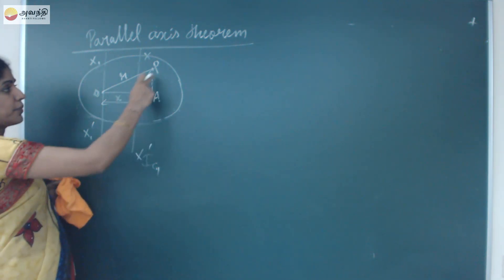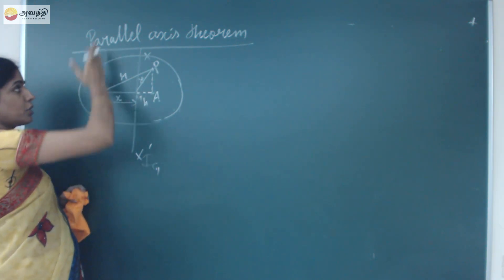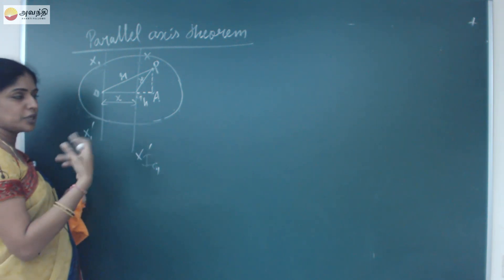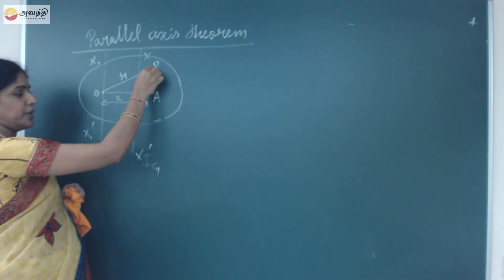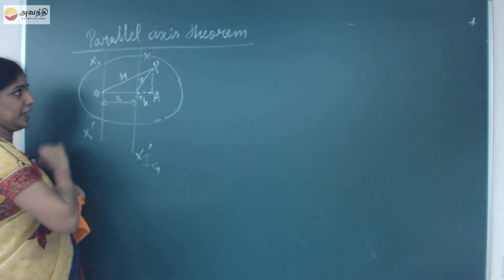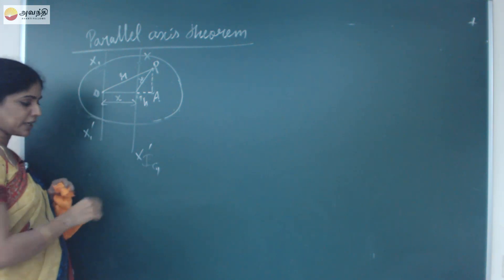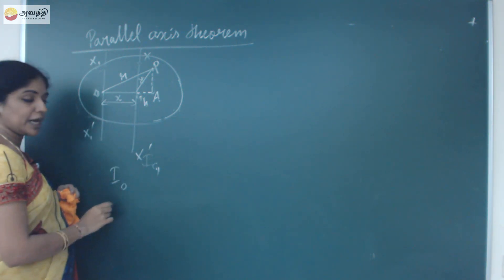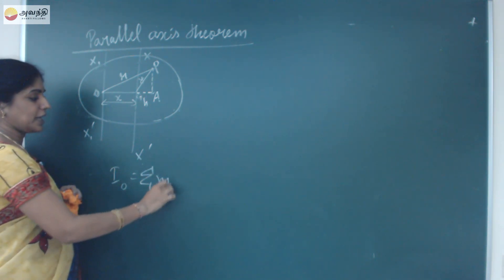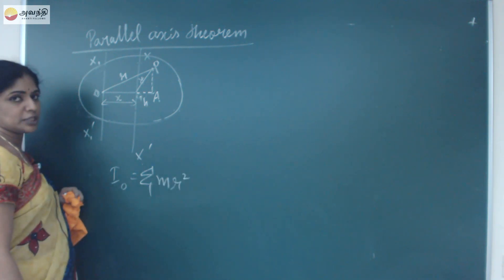Consider an object with a point P in the lamina. There are many particles taking rotational motion. Point P is at a distance R from the axis XOX'. The distance between the two parallel axes is X. The moment of inertia I₀ is given by the summation of all particles at a distance R from the origin: Σ mR².